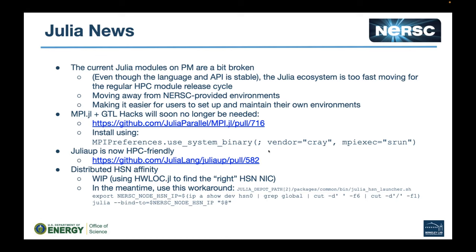For setting up and getting Julia, I've been working with some of the Julia app developers, and the Juliaup tool is now HPC friendly, which allows you to very easily pick the version of Julia that you would like and have it in your environment and work well. There's also a question about whether Julia can do GPU offloading to NVIDIA and AMD GPUs — yes, it can. There's something called KernelAbstractions.jl for application-portable GPU code, and for auto-diff, there's Zygote.jl.